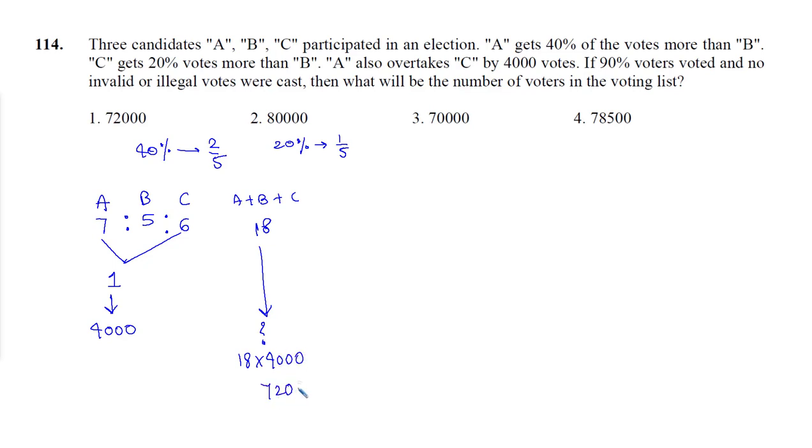These are the total number of valid votes casted. But what is the question? We don't want to find the total number of votes casted. We want to find the total number of voters in the list. Question says that only 90% voters are going to cast their vote. So 90% represent 72000. So 10% represent how much? Divide both sides by 9, you will get 10% represent 8000. So if I add, 100% represent 80,000. So the total number of voters in the voting list are 80000.